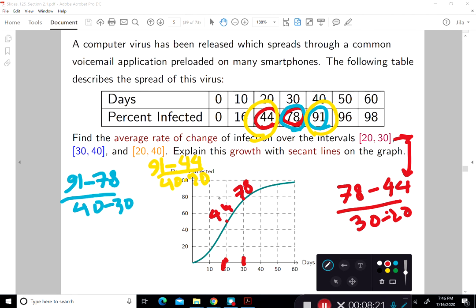And so the slope of the secant line between these two points, the point 20 and 44 and 30 and 78. So these two points on the graph, the slope of the secant line is going to be the difference between y value over the difference over x value. And so the average rate of change is equal to this slope of the secant line. And same thing for that one, same thing for this one.